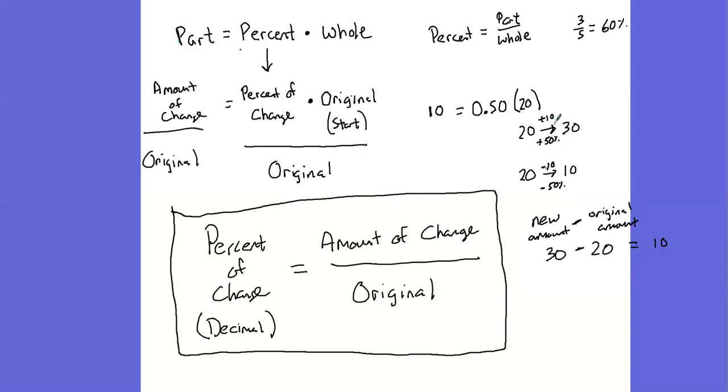If it's a percentage of decrease, so here, let's be clear. Let's say that that's for when it's an increase. Now, if it's a decrease, you want to think of this as your original amount. This is what your textbook's doing. Your original amount minus your new amount.